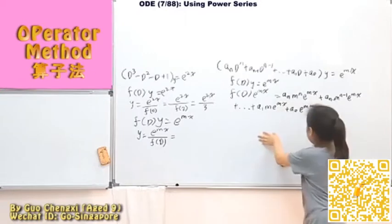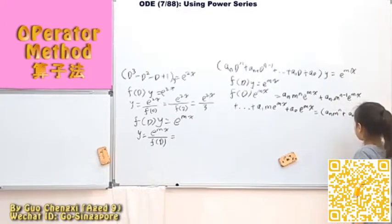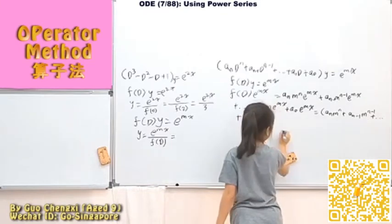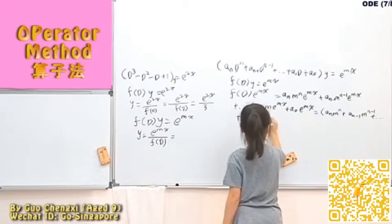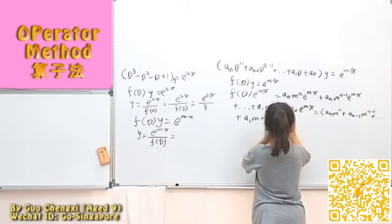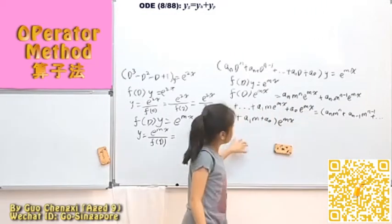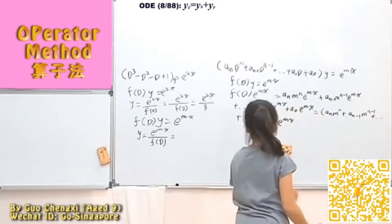So now you know that all of them have e to the power of Mx. So over here, it will become, this equals to like this, right? So for this part, you know this, right? So what's special about it?